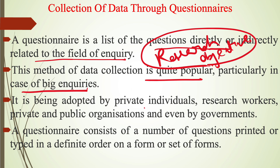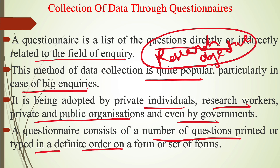This method is adopted by private individuals, research workers, students, governments, and other organizations. A questionnaire consists of a number of questions printed or typed in a definite order on a form or set of forms. Questions are prepared in a particular sequence related to the research purpose and objective, and may be in offline (printed/hard copy) or online form.